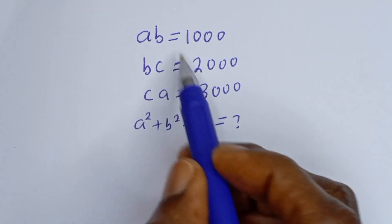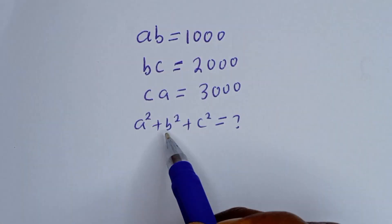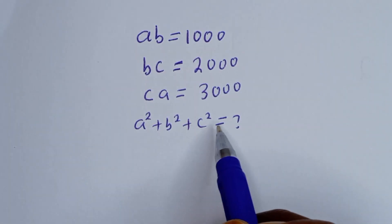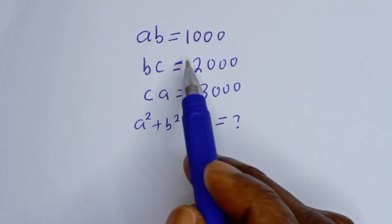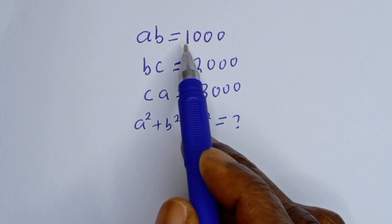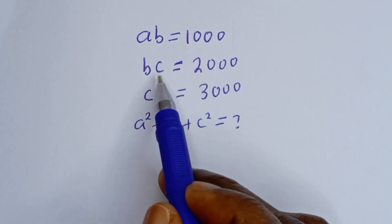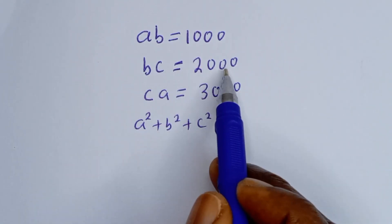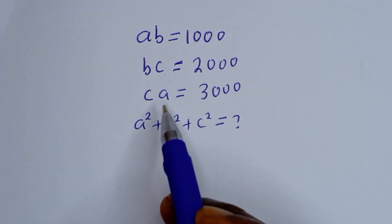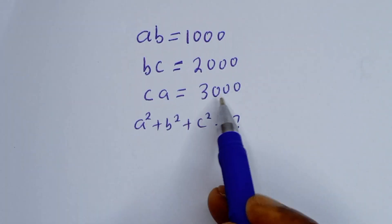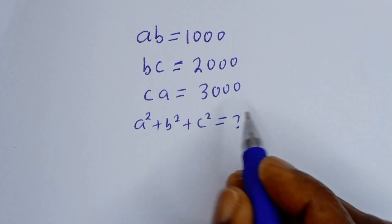Hello. How to solve for A squared plus B squared plus C squared from this given equation? A·B is equal to 1000, B·C is equal to 2000, and C·A is equal to 3000.